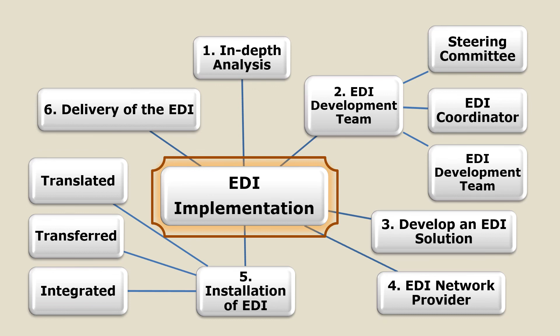Then comes the very important phase: installation of EDI. The EDI is installed among all the business partners and various things are tested — whether business documents are getting translated, whether conversion and mapping are working, whether the communication software can send and receive documents, and whether the integrator is working since sending and receiving companies may use different business applications. The very last step is delivery of the EDI solution: once the business organization is satisfied with the test results, the EDI software is used by all business partners as a regular service.